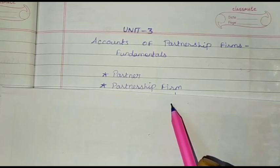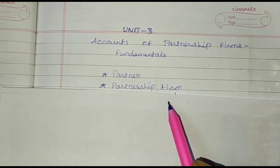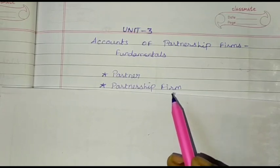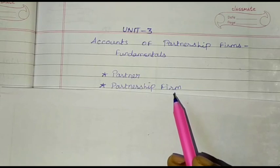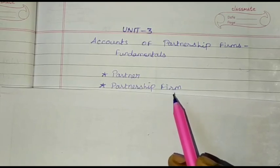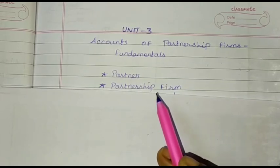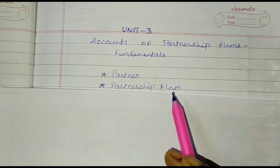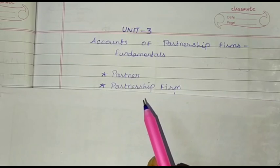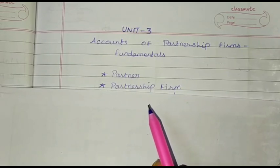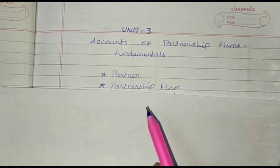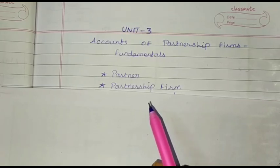To overcome the limitations of sole proprietorship, two or more persons join together in a partnership. The profit or loss arising from the partnership business is shared by the partners in the agreed ratio. The purposes of persons joining together may be to raise more capital, to pool expertise, to share responsibilities and liabilities, etc.